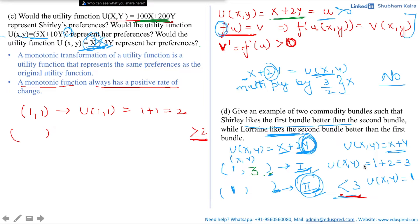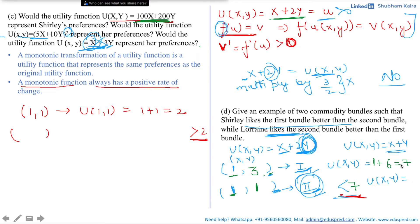If we make the first bundle (1,3), the utility Shirley gets is 1 plus 2 times 3, which is 1 plus 6 equals 7. For Shirley to prefer the first bundle, the second bundle's utility must be less than 7. Let's reduce y to 1, keeping x as 1, giving the second bundle (1,1). Shirley's utility from (1,1) is 1 plus 2, which is 3 — less than 7. So Shirley prefers (1,3) over (1,1).